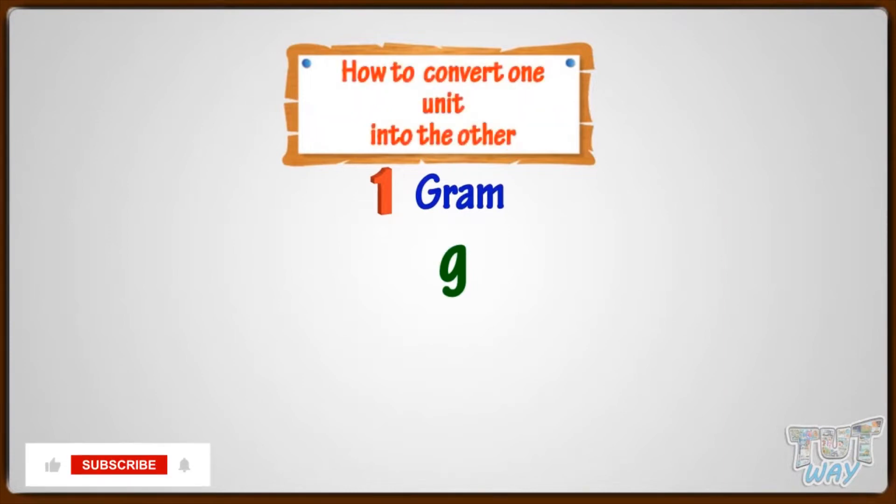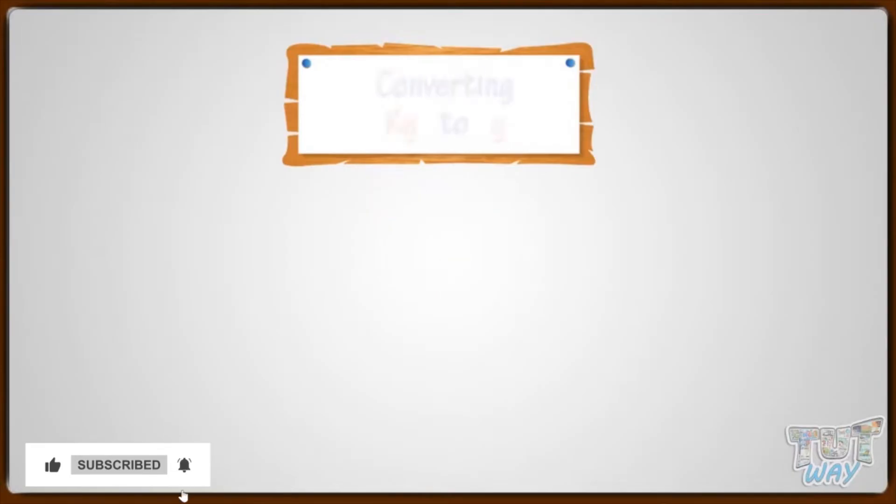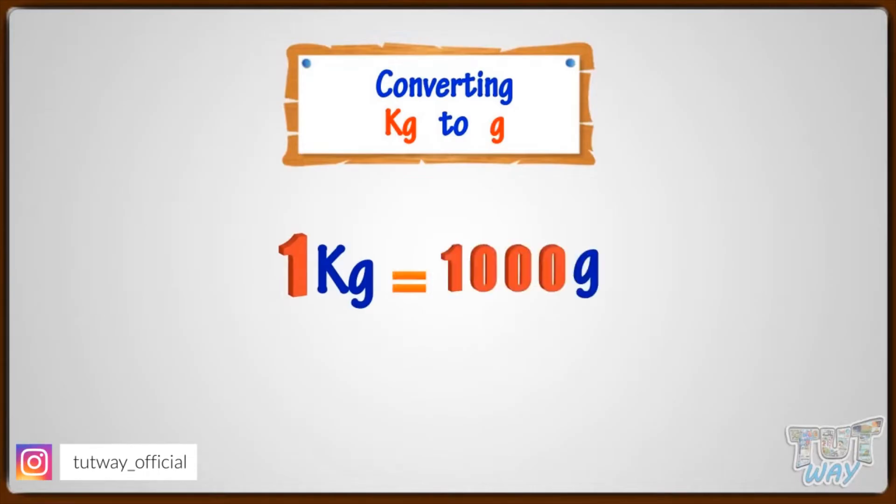Now let's learn how to convert one unit into the other. Converting kilograms to grams. One kilogram equals 1,000 grams.